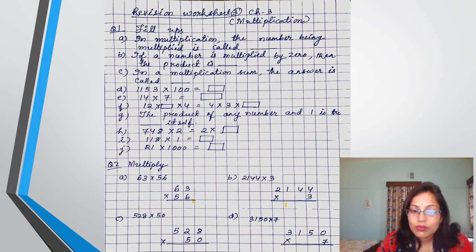Next, 528 multiplied by 50 and 3150 multiplied by 7. When you are doing the multiplication, write the numbers in separate boxes. Don't overlap any number. Don't write two numbers, two digits or three digits in one box. It will be wrong.